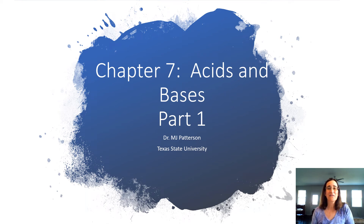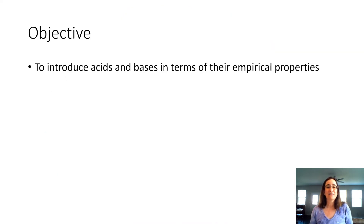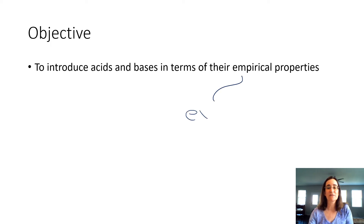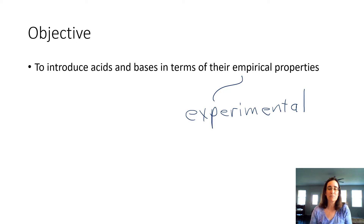Hi, Bobcats. In this lecture, we're going to introduce acids and bases. The objective here is to look at acids and bases in terms of their empirical properties. Empirical is just another word for experimental — we're talking about things that can be observed, quantified, and measured. So when you see empirical, you can substitute the word experimental for that.